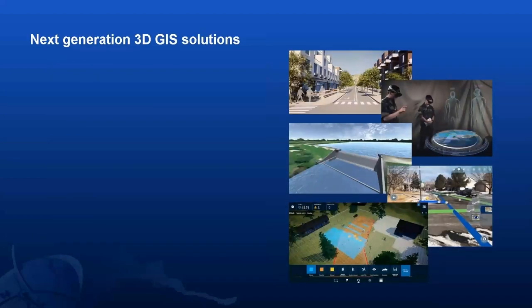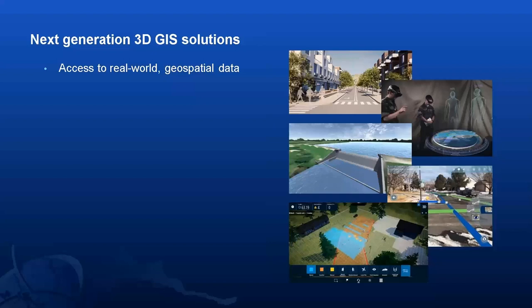Before we dig into capabilities and technologies of the Maps SDK, I'd like to provide a brief overview of how we got here and why what we're doing is important. Over the past few years, we've seen a number of industries, enterprises, and businesses pursue their next generation of 3D GIS solutions. As these solutions apply to the real world, they need to leverage existing authoritative geospatial systems while taking advantage of new technologies to gather, store, and distribute geospatial information. Esri, as the global leader in this space, continues to deliver systems to manage, maintain, and utilize geospatial data.